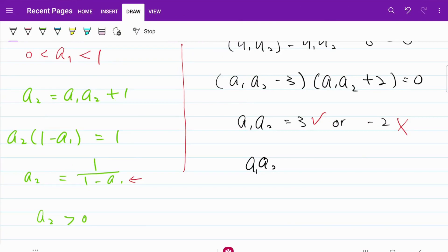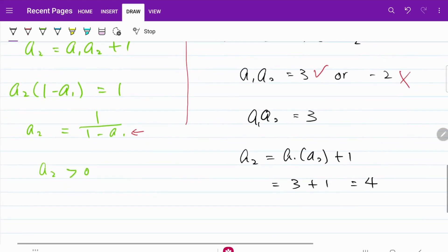We have worked out a lot of values, so let's spend some time to put everything together. I have A1·A2 = 3. And from there, make use of A2 = A1 multiplied by A2 + 1, which is equal to 3 + 1, that's equal to 4. And also previously, we know that A6 = 5.